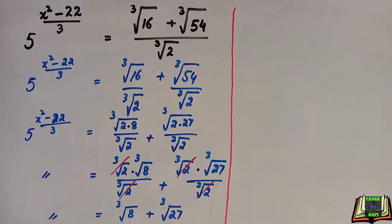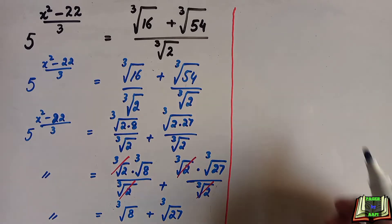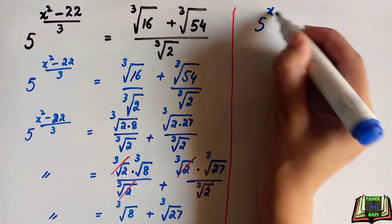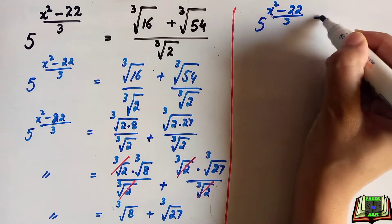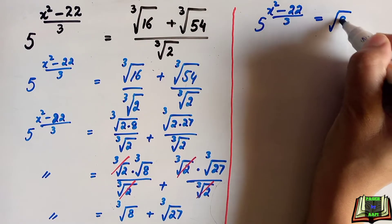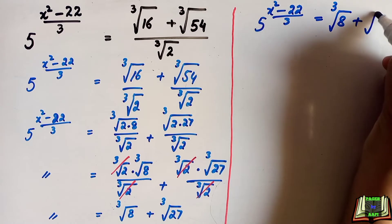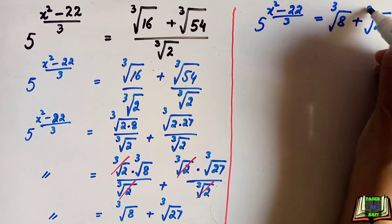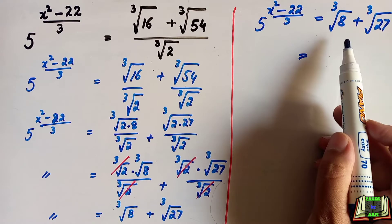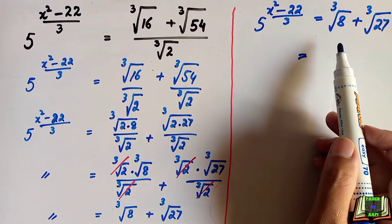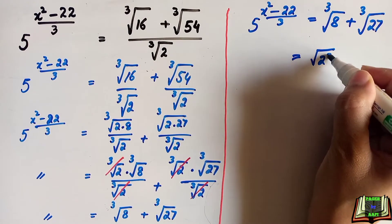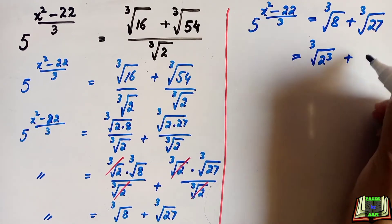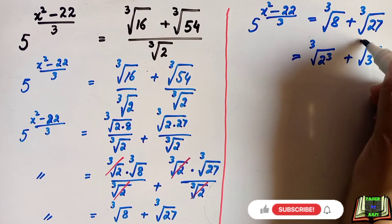Now the equation on the left-hand side is 5 to the power x squared minus 22 divided by 3, equal to cube root of 8 plus cube root of 27. We write 8 as 2 to the power 3, since 2 times 2 is 4 and 4 times 2 is 8, and 27 as 3 to the power 3.